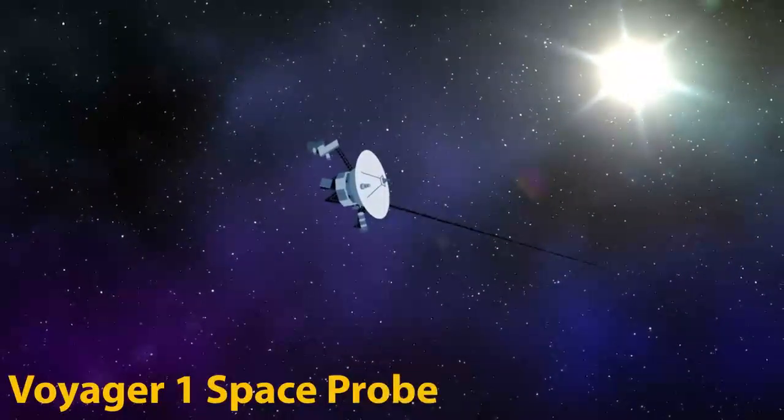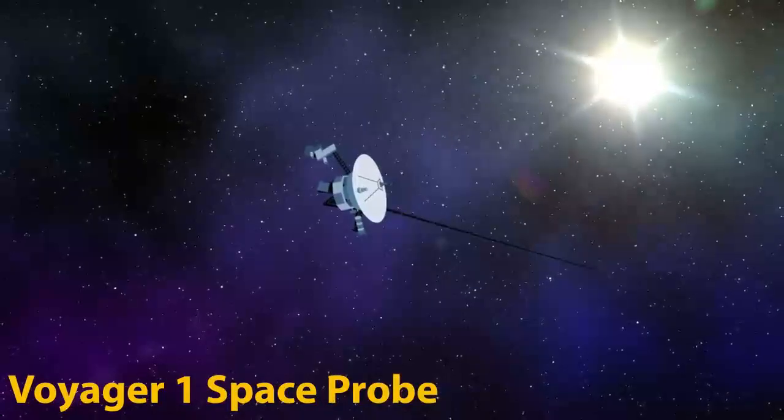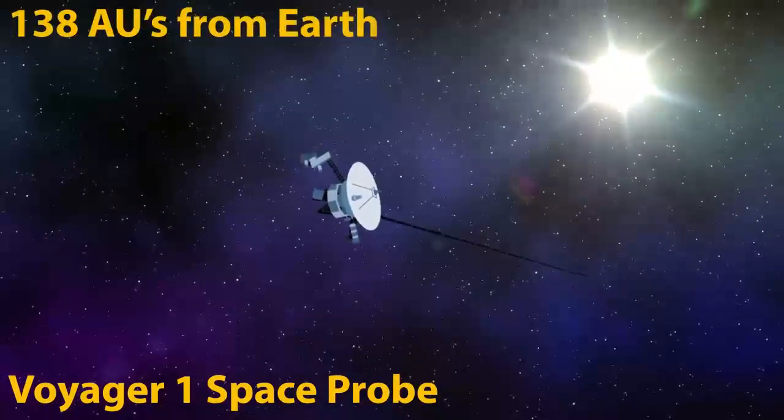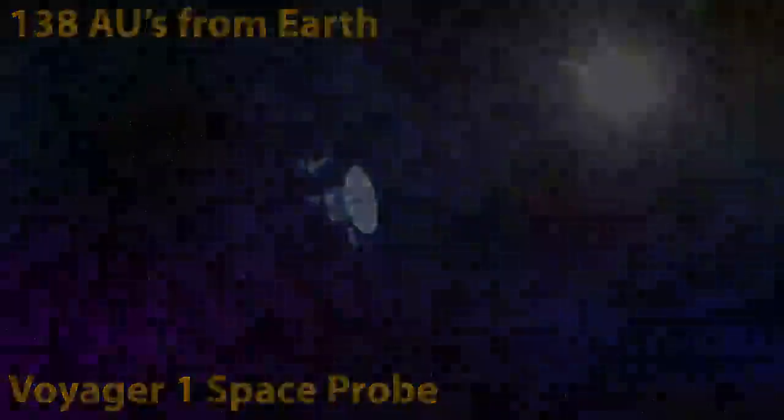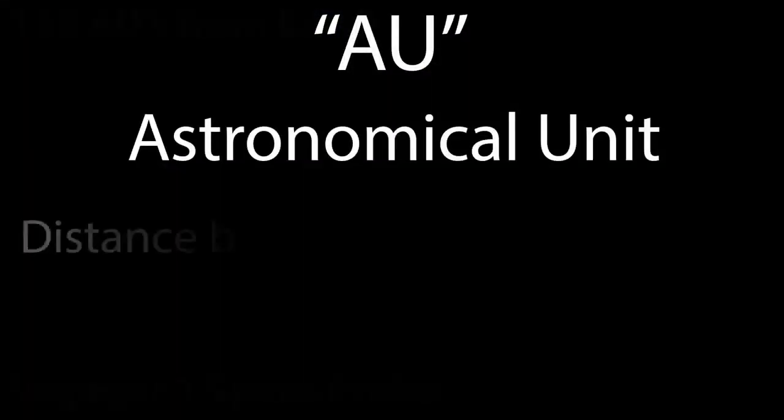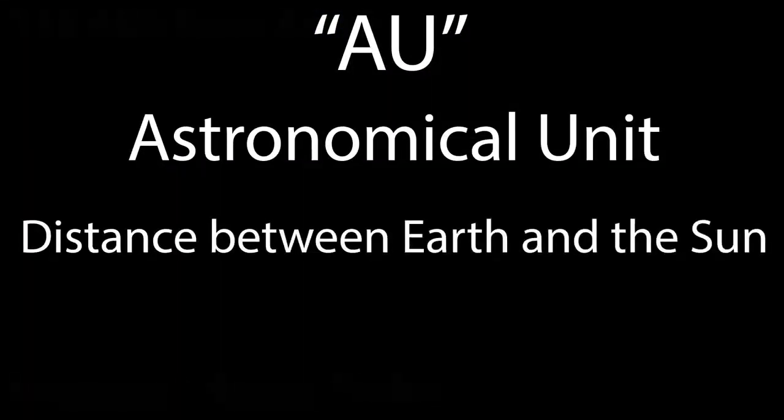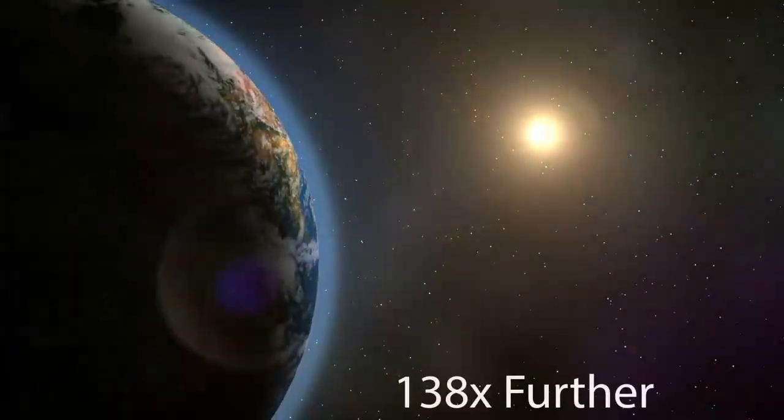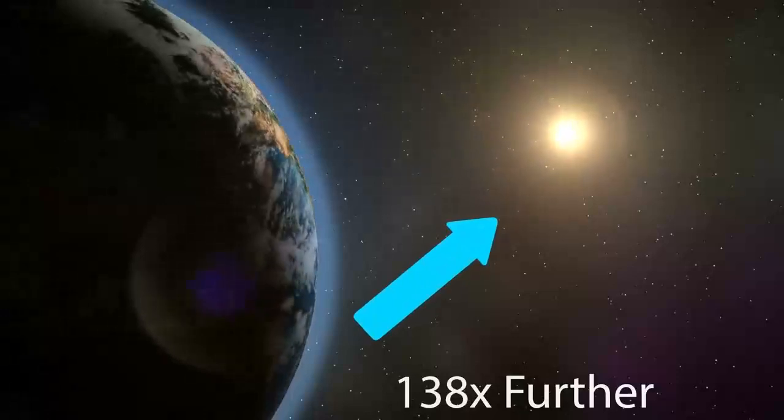When we zoom out even further away, we can find the Voyager 1 space probe, which is the furthest away man-made object from Earth. It is currently located 138 AUs from the Earth, AU meaning Astronomical Unit, which is the distance between the Earth and the Sun, which means that Voyager 1 is 138 times further away from us than the Sun is.